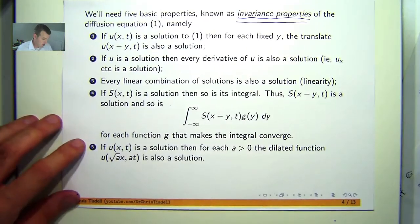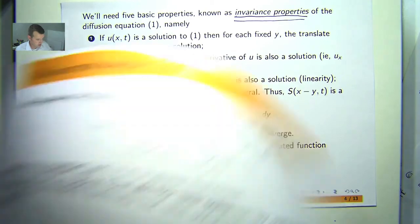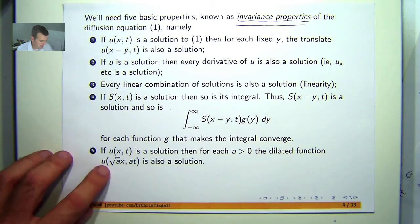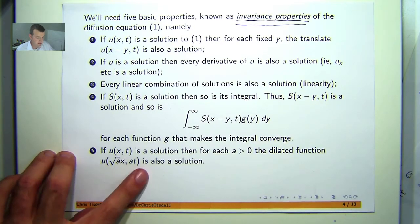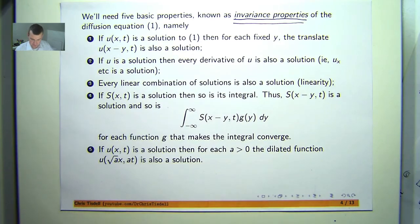And now the last thing we want to solve, or show, is that if u(x,t) is a solution to 1, then for each positive value a, the dilated function u of this is also a solution. So let's see how we can prove that.